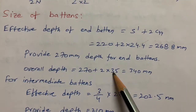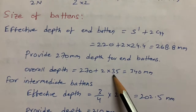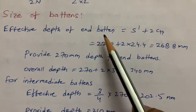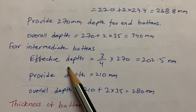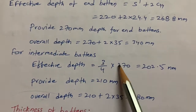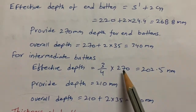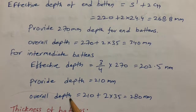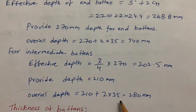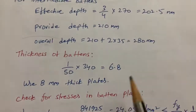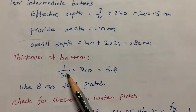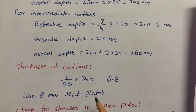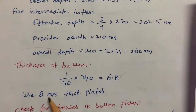For intermediate battens, the effective depth = 3/4 × 270 = 202.5 mm, so I provide 210 mm as specified by the code. The overall depth = 210 + 2 × 35 = 280 mm. For thickness of the battens, the code specifies 1/50th of the overall depth, so thickness = 340/50 = 6.8 mm. I provide 8 mm thick plates.